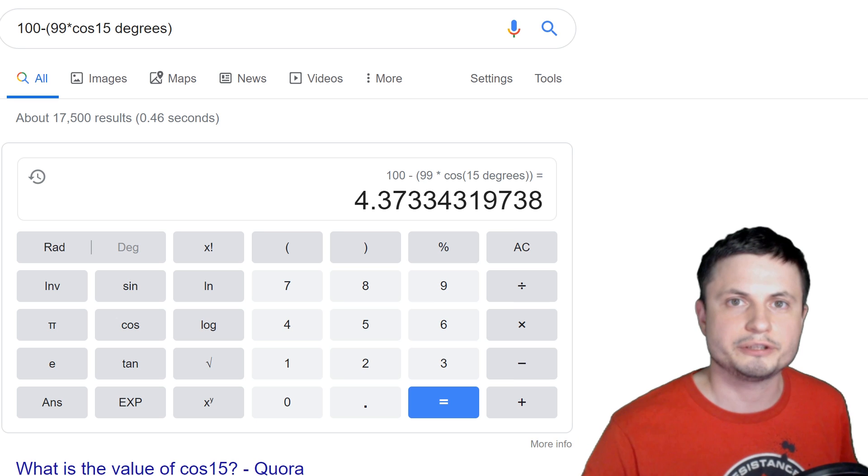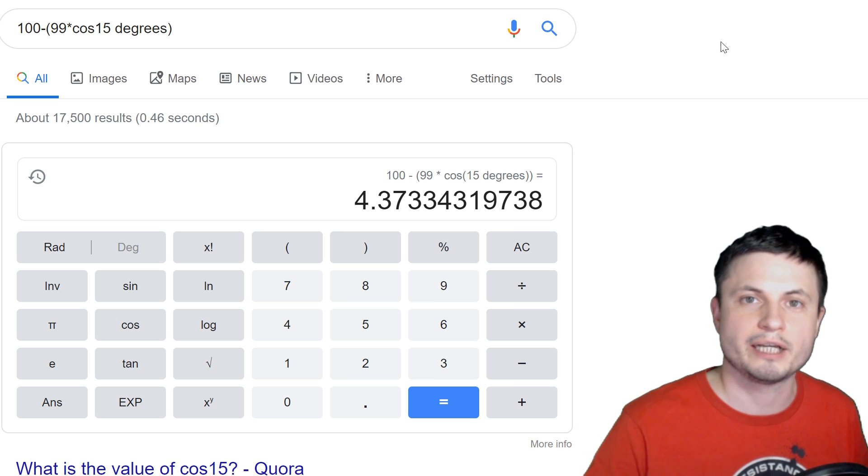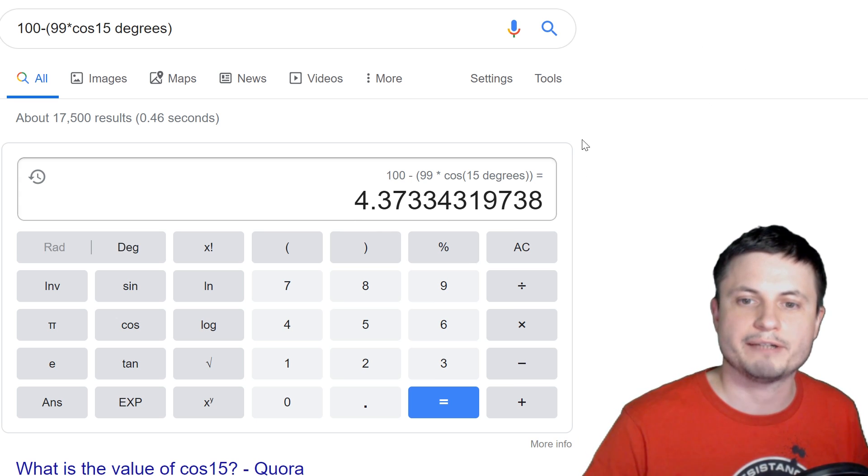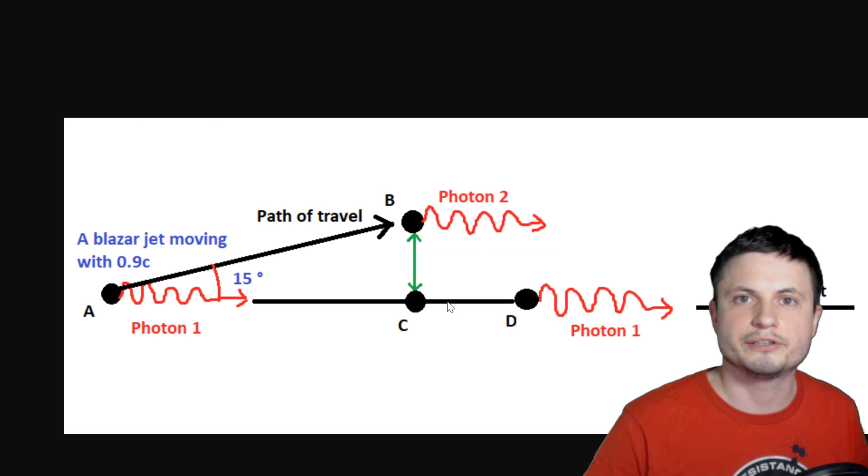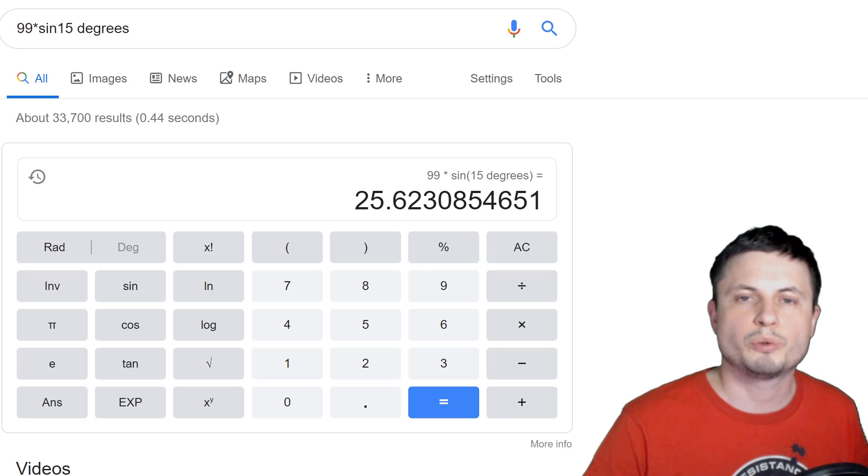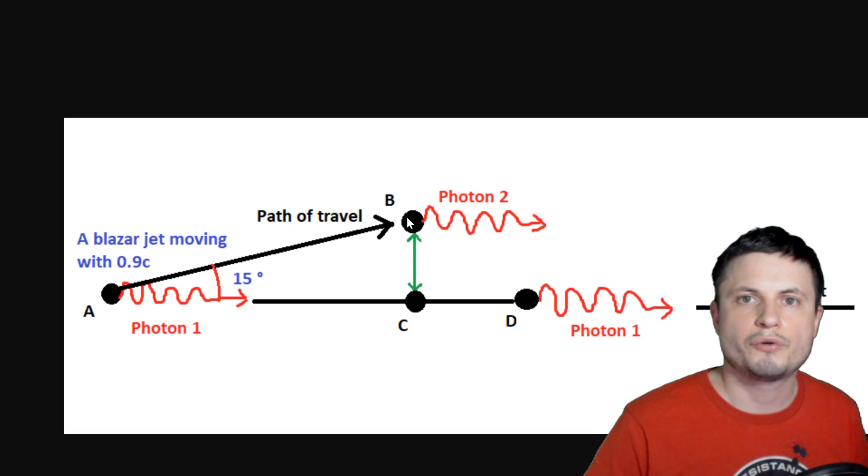If we go back to the calculations I just showed you and replace 90 with 99, you'll actually get 4.37 light years for this distance here, which is CD, and 25.6 light years for the distance right here known as BC, which means that the superluminal effect here would be about 5.9 times higher.